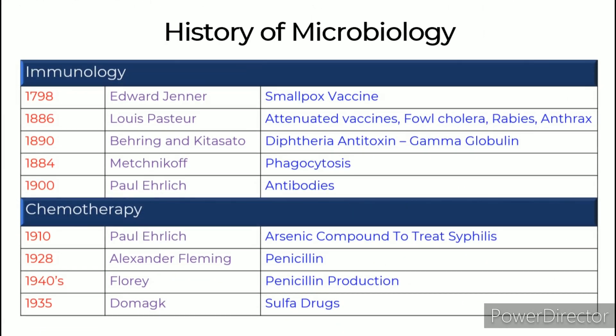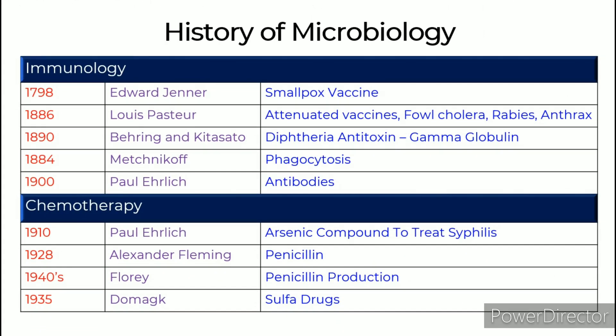Immunology: In 1798, Edward Jenner developed the smallpox vaccine. In 1886, Louis Pasteur created attenuated vaccines for fowl cholera, rabies, and anthrax. In the 1890s, Behring and Kitasato developed the diphtheria antitoxin, which is the gamma globulin. In 1884, Mechnikov discovered phagocytosis. In 1900, Paul Ehrlich discovered antibodies.